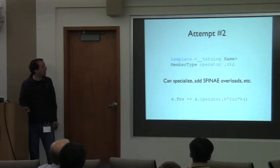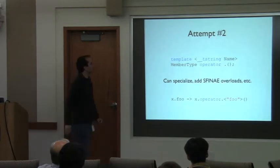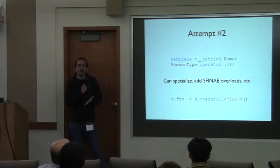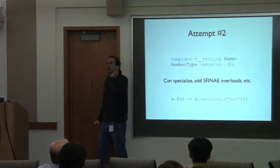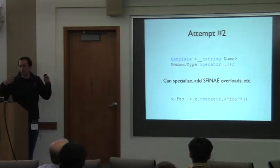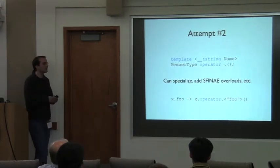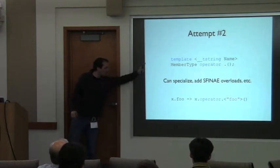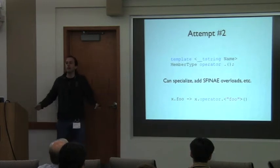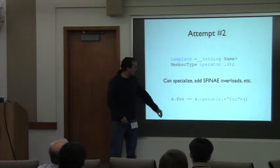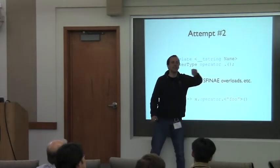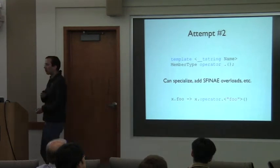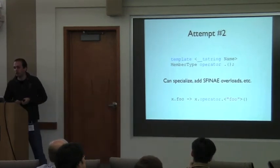I introduced a new built-in type: __tstring. It's a compile-time string. Char arrays are incomplete types so you don't want to use those. With __tstring, if I do x.foo, the compiler translates this into x.operator.<"foo">() — passes the name as a string template argument and calls that. Member type would be the return type of the operator; it somehow decides what type the member with that name has.